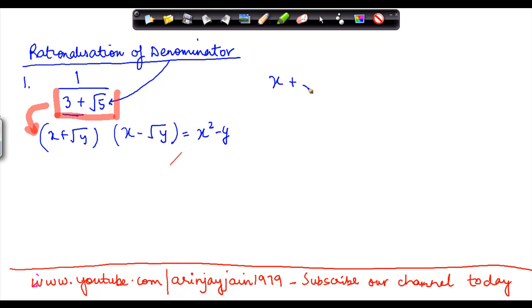So we have x plus under root y is equal to something like 3 plus under root 5, which shows that the value of x is equal to 3 and y is equal to 5.